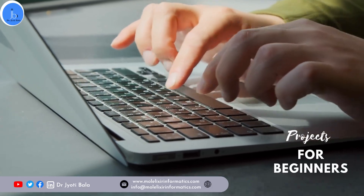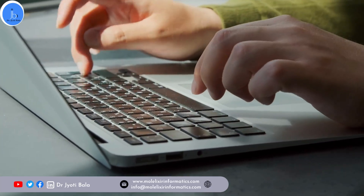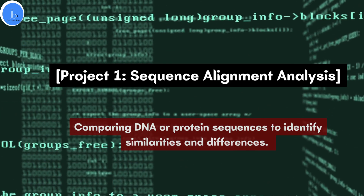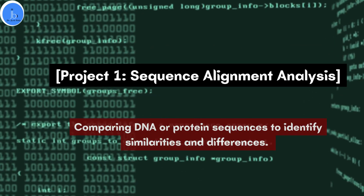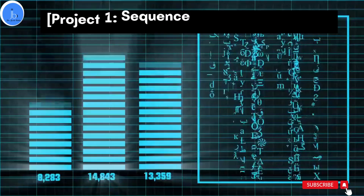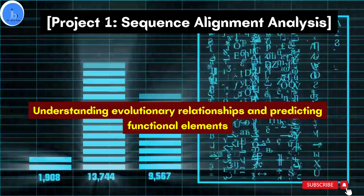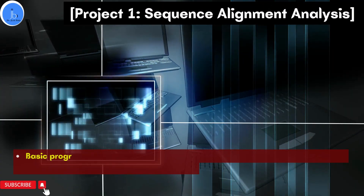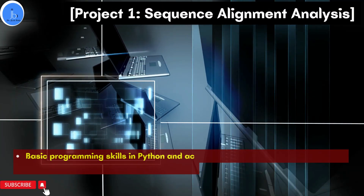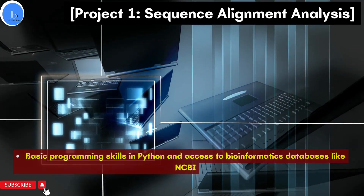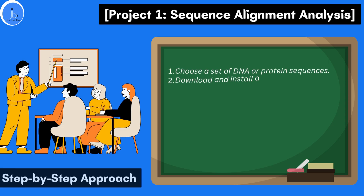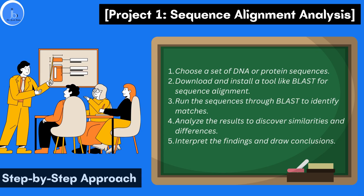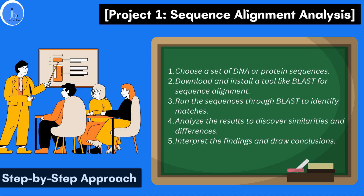If you are a beginner student or researcher and new to bioinformatics, I would suggest you to start with a mini-project which includes sequence alignment. This involves comparing either DNA, RNA or protein sequences to identify similarities and differences by using bioinformatics tools and resources. The benefit of such projects include understanding evolutionary relationships and predicting functional elements. For running such a project, you need basic programming skills in Python and access to bioinformatics databases like NCBI.